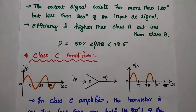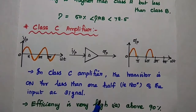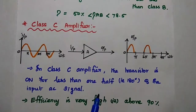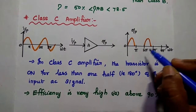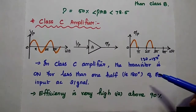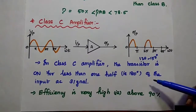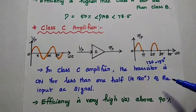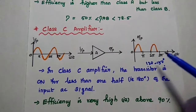The next one is class C amplifier. In this amplifier, the transistor is in the active region only for less than one half of the input signal, that means less than 180 degrees. It can produce only 120 to 150 degrees of conduction. The transistor is on for less than one half of the input AC signal. We can get high efficiency, that is above 90%, but it has very high distortion due to this minimum conduction.